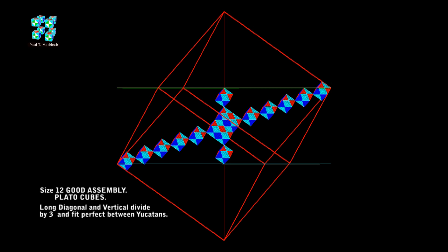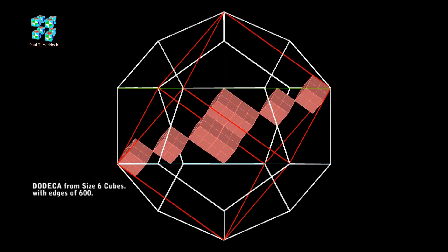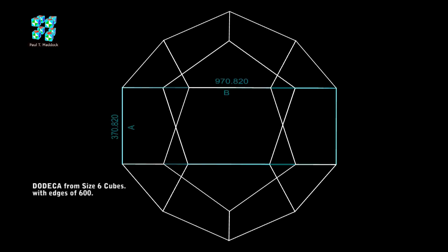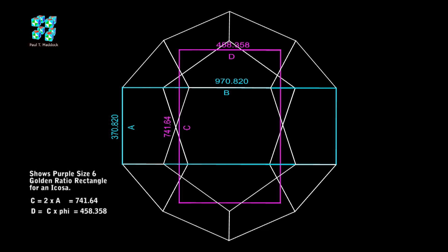Now let's go back to the size 6 arrangement again. I only need the Dodeca for this. I'm going to show you a rectangle between two opposite edges. The cube edge size is 600. The Dodeca edge A is the cube edge times 5. The long edge of the rectangle, which I call B, is the Dodeca edge A times 2.168, which is 5. Now I'm going to bring in the golden ratio rectangle for the icossa. The longer length of this purple rectangle, which I call C, is exactly double the edge of the Dodeca. If you multiply the longer edge of the icossa by phi, it will give you the distance of the shorter length.